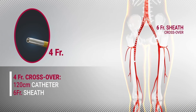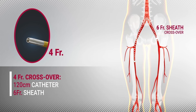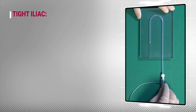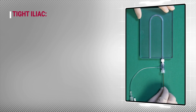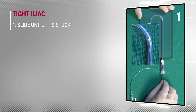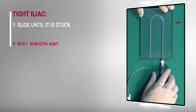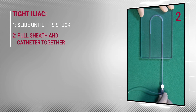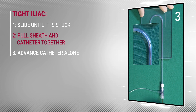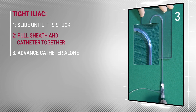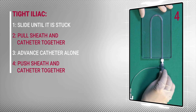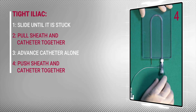When crossing a tight iliac arch with the 4 French device, it is recommended to use the following maneuver. Start the procedure with the long 6 French sheath and the 120 cm 4 French B-back catheter. Advance the B-back until it cannot be advanced further over the iliac arch. Pull the sheath together with the B-back catheter backwards a few centimeters. While holding the sheath in place, advance the B-back catheter forward until it can no longer advance. Then push the sheath and the B-back together a few centimeters, and the B-back will cross over smoothly.